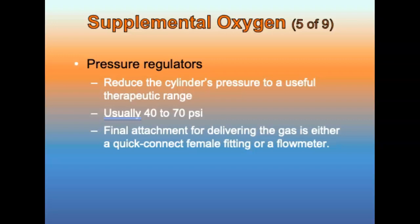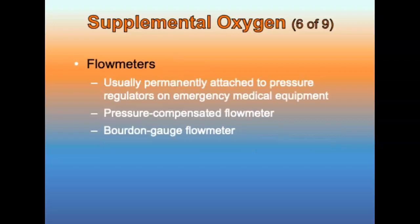Pressure regulators reduce the cylinder's pressure to a useful therapeutic range, usually between 40 to 70 psi. After pressure is reduced to a workable level, the final attachment is either a quick-connect female fitting or a flow meter that permits the regulated release of gas measured in liters per minute. A pressure-compensated flow meter incorporates a float ball within a tapered calibrated tube; it is affected by gravity and must always be kept upright, so it is usually used in fixed places like a wall. A Bourdon gauge flow meter is calibrated to record flow rate, can be used in any position, and is generally considered outdated.